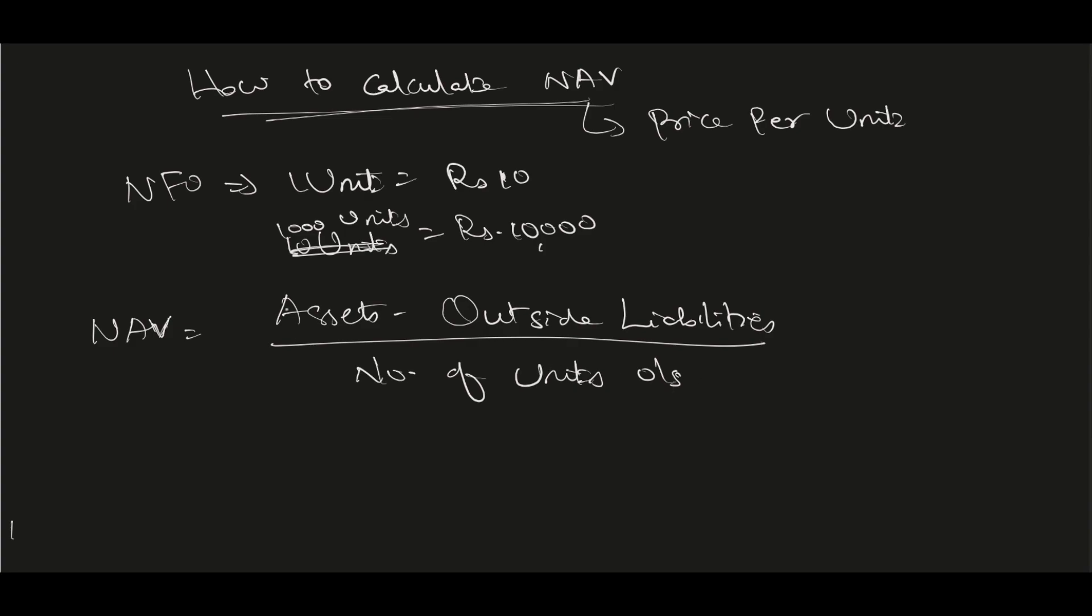Outstanding means the number of units issued to the unit holders or investors. Assets here represents mostly the securities where the fund has invested, the value of the securities which keeps on changing. This is where maximum changes happen. Outside liabilities are marketing expenses, rental charges, and all such things.